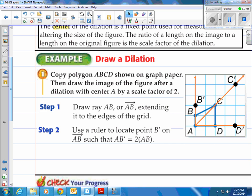And then using a ruler to locate point B prime, B prime is what we call that little symbol there, the quote mark. So use a ruler to locate point B prime on ray AB and you can see that's right here such that AB prime is two times the length of regular AB. So you're gonna make it two times this length right here which makes it two units instead of one unit.